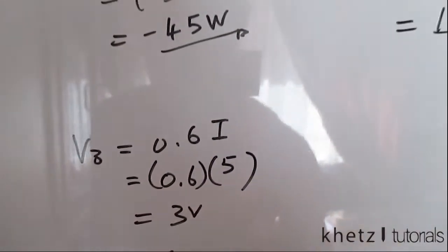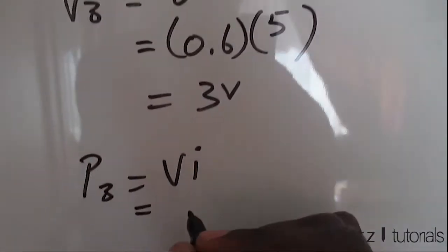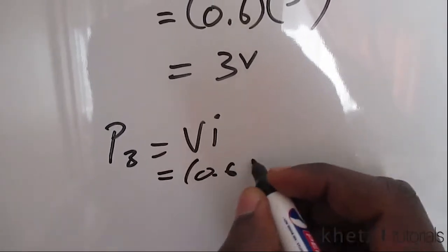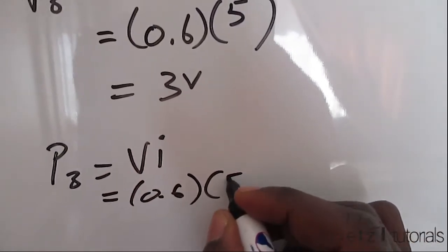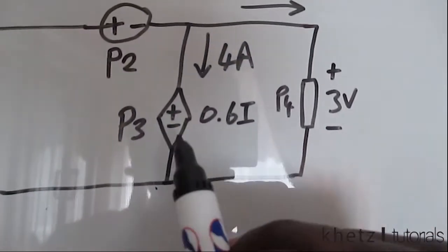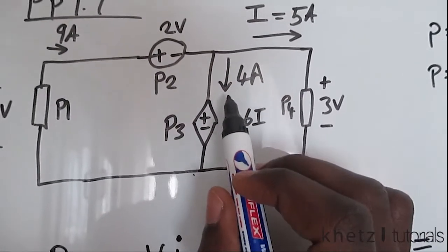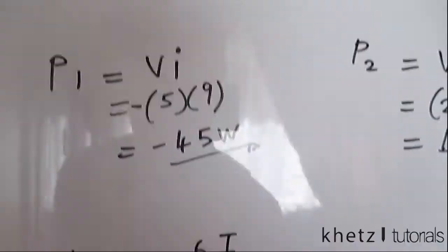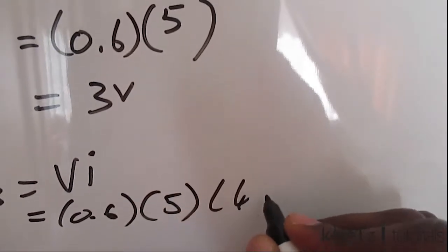Or you could just simply plug in everything at once by saying 0.6, the value of I, which is 5. Then I again, I which passes through P3 is 4. And it passes through the positive first. So we keep it like that, and say 4. And this should give you 12 watts.